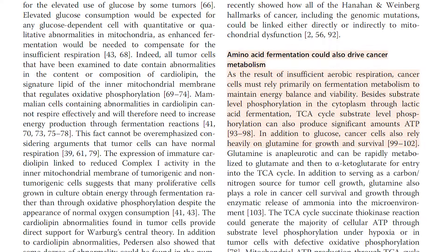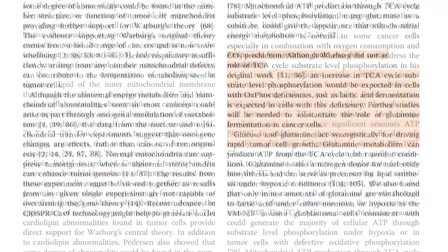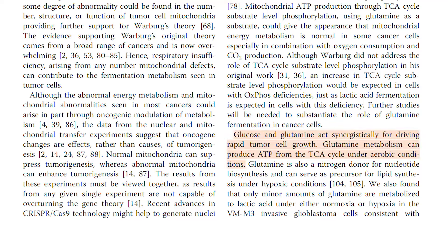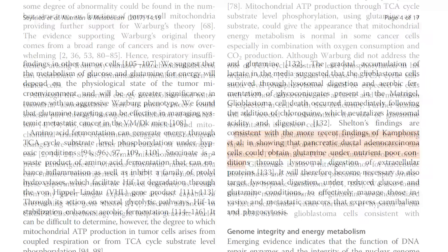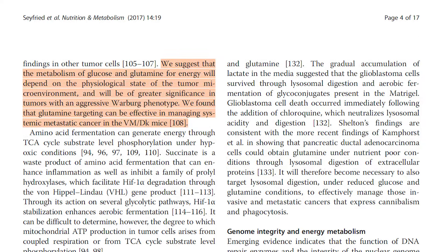Amino acid fermentation could also drive cancer metabolism. As the result of insufficient aerobic respiration, cancer cells must rely primarily on fermentation metabolism to maintain energy balance and viability. Besides substrate-level phosphorylation in the cytoplasm through lactic acid fermentation, TCA cycle substrate-level phosphorylation can also produce significant amounts of ATP. In addition to glucose, cancer cells also rely heavily on glutamine for growth and survival. Glucose and glutamine act synergistically for driving rapid tumor cell growth. Glutamine metabolism can produce ATP from the TCA cycle under aerobic conditions.